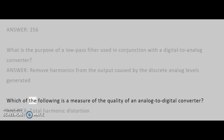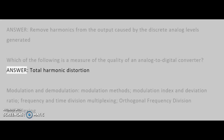Which of the following is a measure of the quality of an analog to digital converter? Answer: Total harmonic distortion.